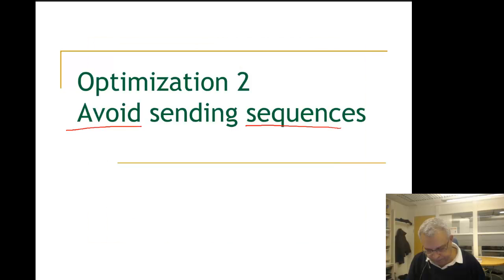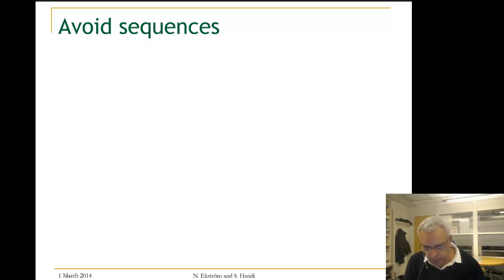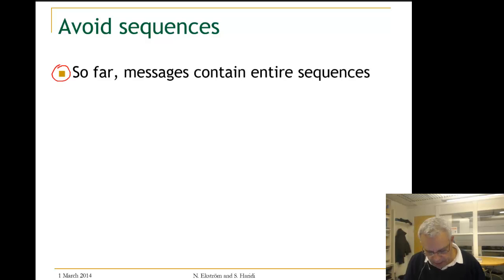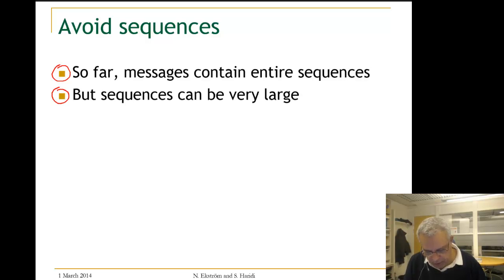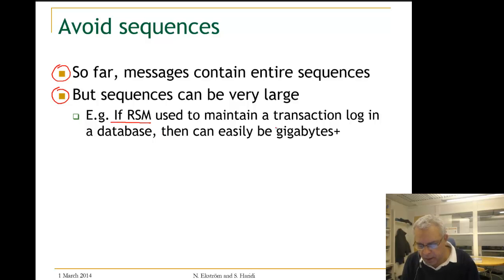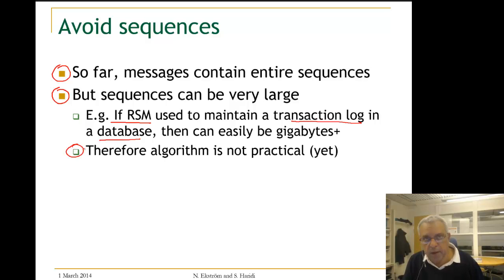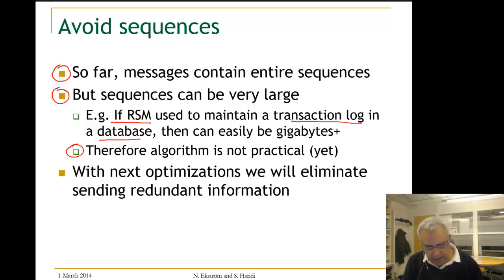We will continue looking at optimizations in Multi-Paxos. What we would like to do now is look at how we can avoid sending full sequences, and instead send only increments. So far, messages contain entire sequences, but sequences can be very large. If we are implementing a replicated state machine to maintain a transaction log in a database, these can easily be gigabytes of data. So the algorithm we have right now is not practical.